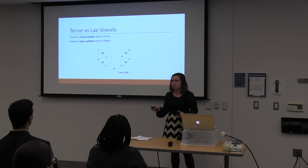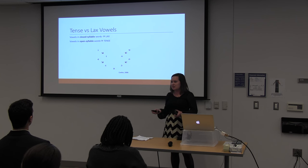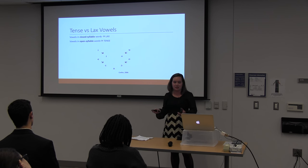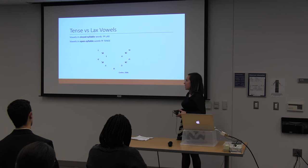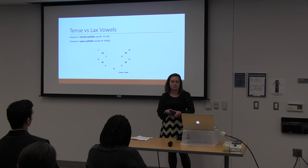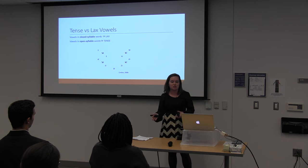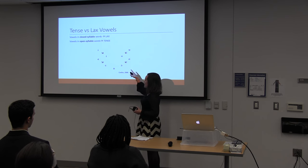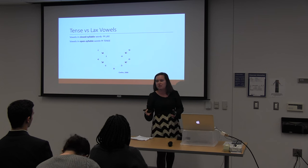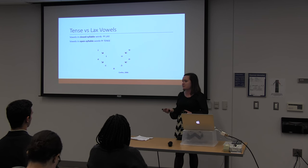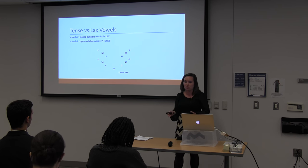So if S is used as a cue to plurality in non-leniting varieties of Spanish, what happens in leniting varieties such as the Andalusian region, where they're leniting the S and not getting that cue? Here we'll talk about tense and lax vowels. Vowels in closed-syllable words — words produced with a consonant at the end — are typically produced lax, while vowels in open-syllable words — words ending in a vowel — are typically produced tense. Here we have a vowel chart, and as you can see, everyone has a tense and lax pair with the exception of A. These vowels could possibly be a cue to plurality if the S is lenited and they no longer have that cue.